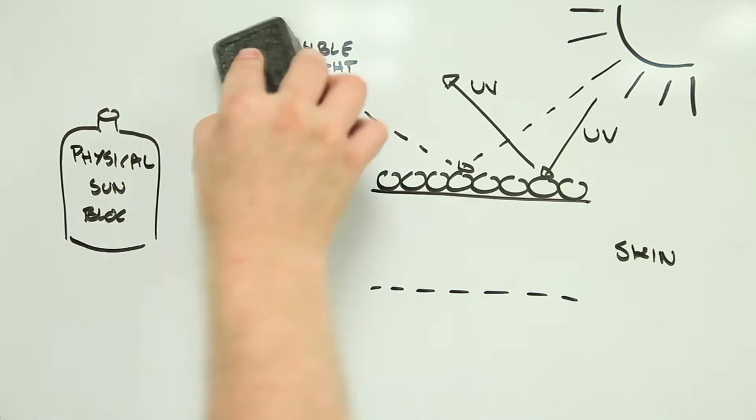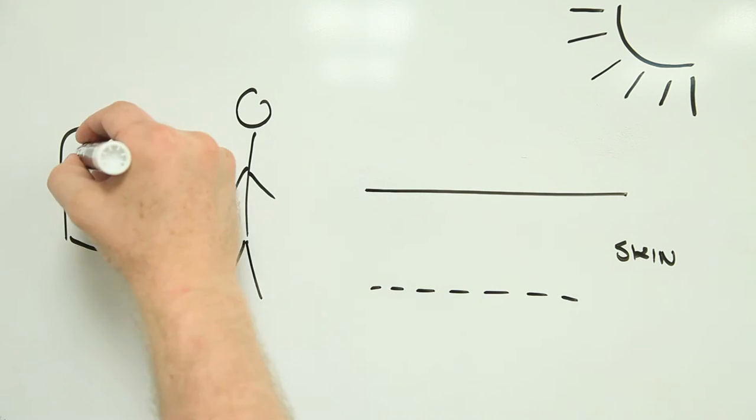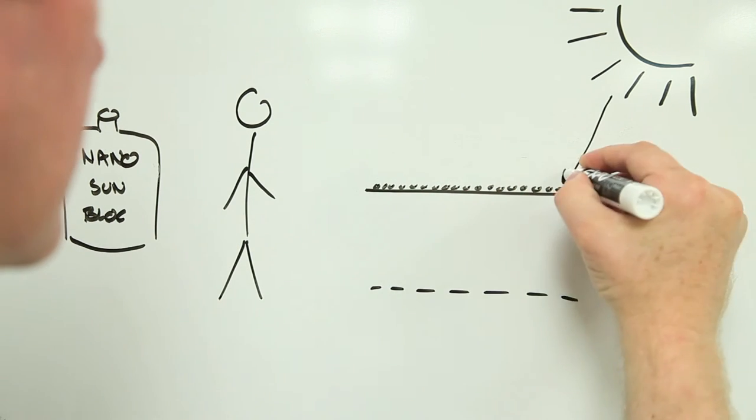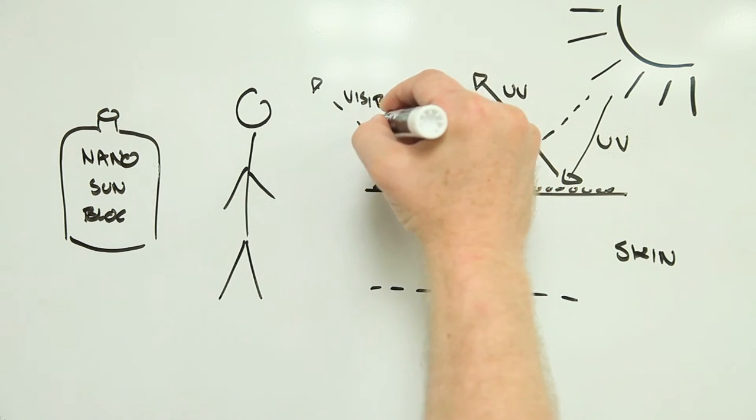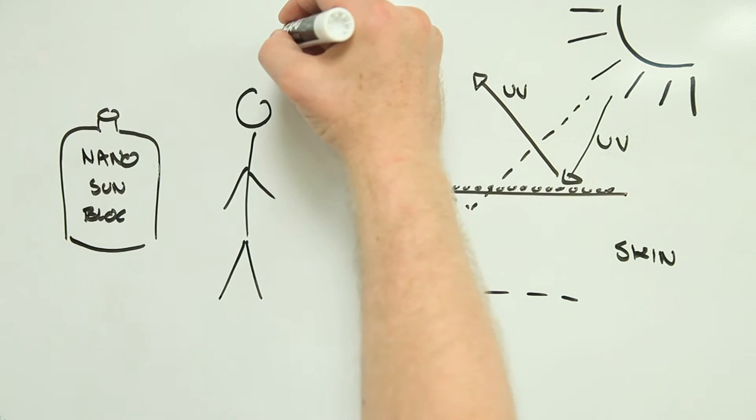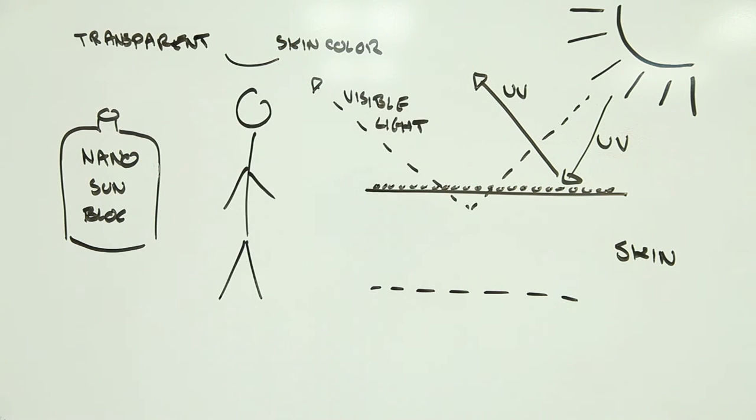However, making the particles small, around 20 nanometers in diameter, hits a sweet spot where they reflect the harmful UV light but are transparent to visible light. In other words, you have a highly effective yet invisible sunscreen.